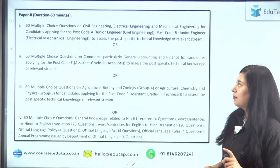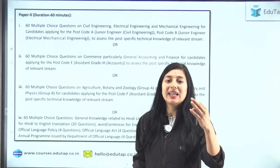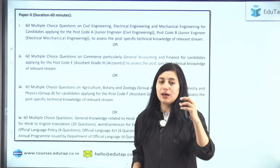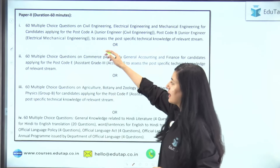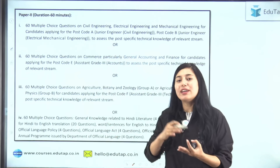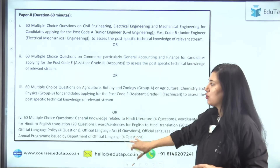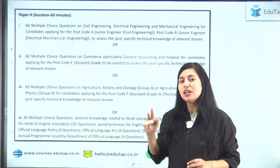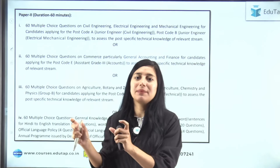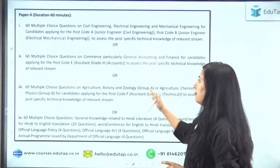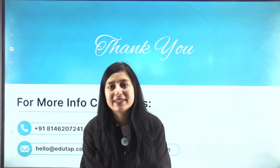Paper 2 hota hai basically aapka discipline-specific. There will be 60 questions of your particular discipline.